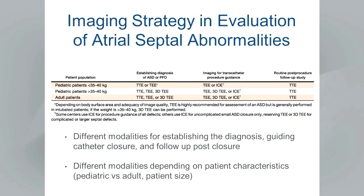A key feature of the document is recognizing that different echo modalities are used at different stages: establishing the diagnosis of an atrial septal abnormality, determining patient candidacy for transcatheter closure, guiding the procedure, and routine post-procedure follow-up. Transthoracic echo is pivotal in establishing the diagnosis, but TEE or intracardiac echo may be needed for patient eligibility and procedure guidance. For routine post-procedure follow-up, transthoracic echo is clearly sufficient.